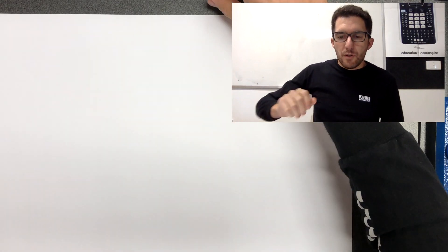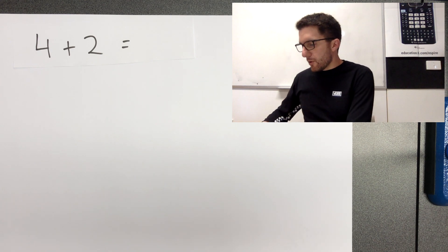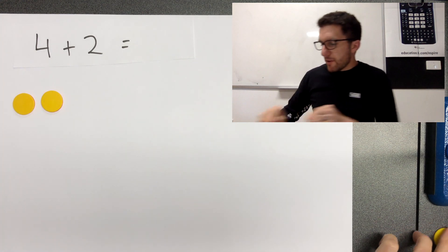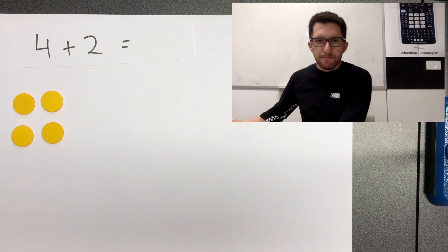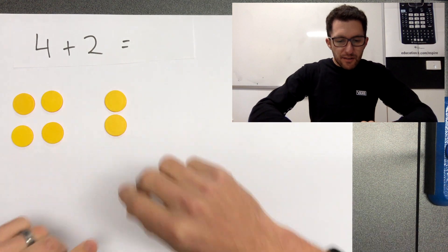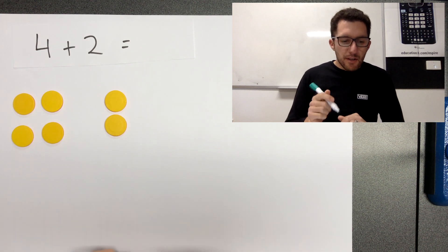So let's have a look at some examples together. Here we have four plus two. So we have our four yellow counters plus another two yellow counters. What is the value of all these counters? It's six.